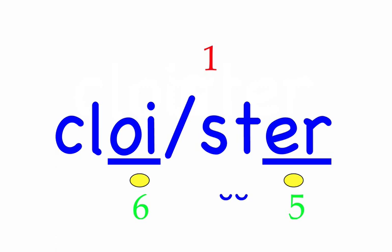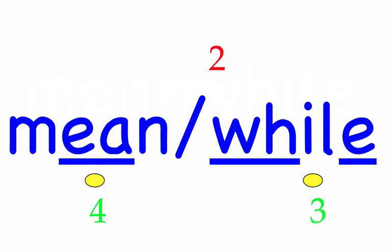Meanwhile. Meanwhile, back at the ranch, the cowboys began to work. First syllable: mean, three sounds, M-E-N. Second syllable: while, three sounds, W-I-L. Mean, while — mark the word.